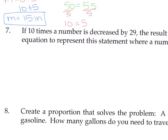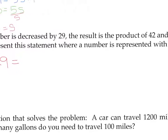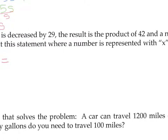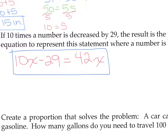If 10 times a number is decreased by 29, the result is the product of 42 and a number. Write an equation using variable X. We don't have to solve this one, just write it. Going word by word: 10 times X, decreased by 29, gives 10X minus 29. The result is — means equals. The product of 42 and a number means multiply, so that's 42X. The equation is 10X minus 29 equals 42X.